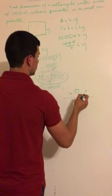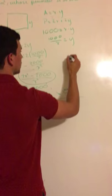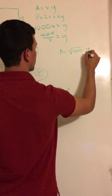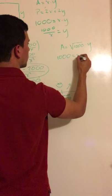After this is correct, you plug into the original area formula. So it will be the square root of 1000 times y. You have the total area which is 1000 equals the square root of 1000 times y.